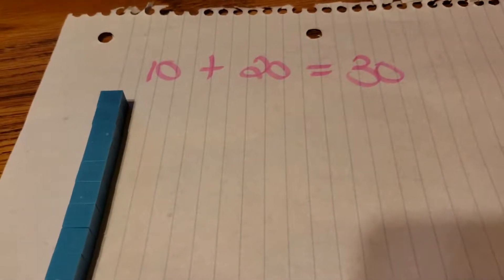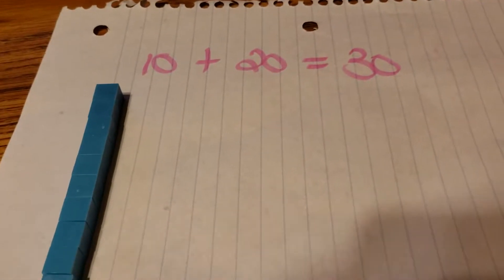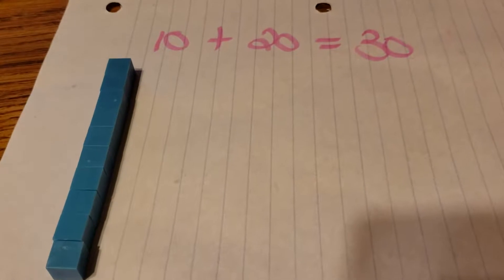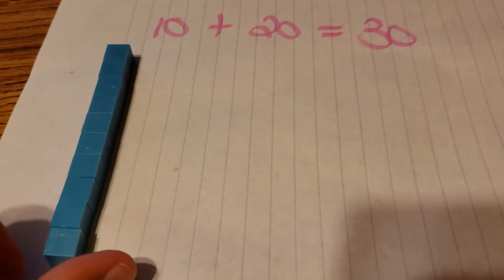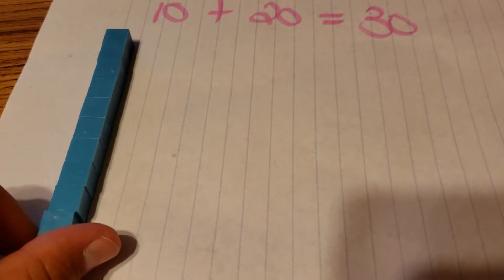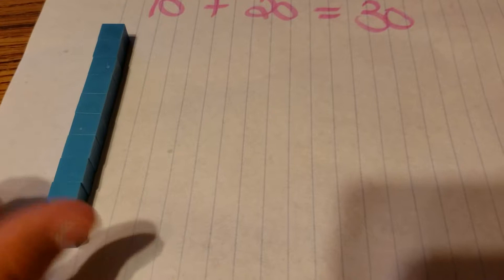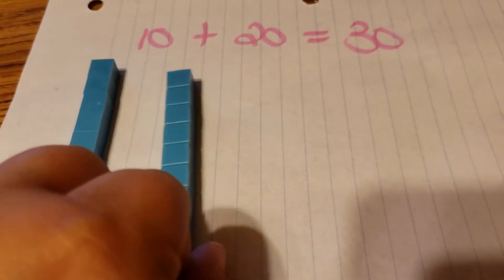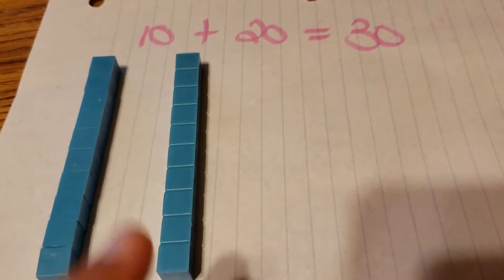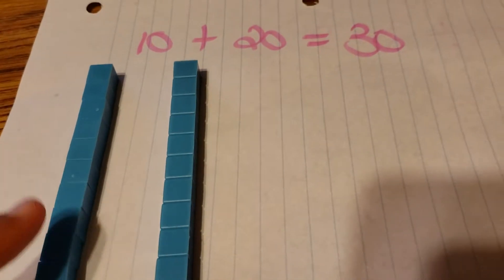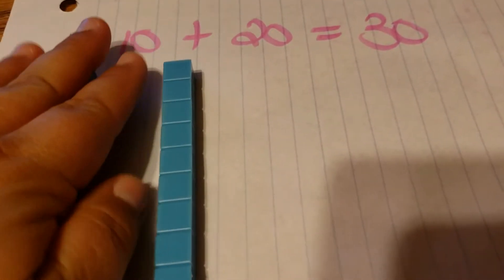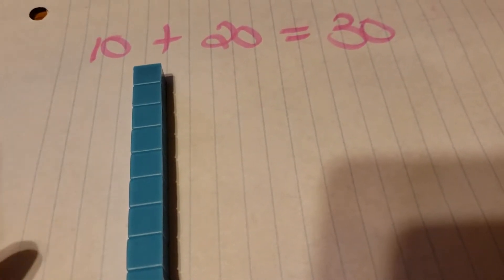We are going to start with 10 plus 20 equals 30. I laid out 10 individual little blocks here to show you that one of these strips equals 10 of these little blocks. So we're going to push this to the side.